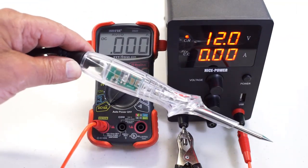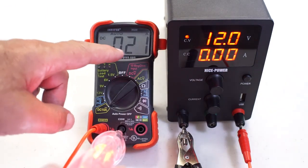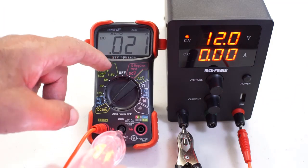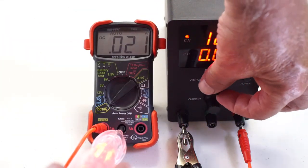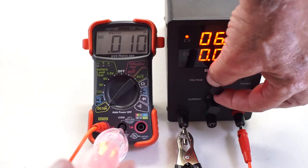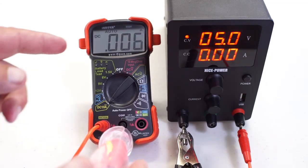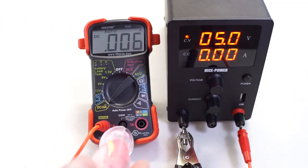There's an alternative to the incandescent test lights and that's these LED type. At 12 volts it only draws 21 milliamps. At a 5 volt reference voltage it's only 6 milliamps.